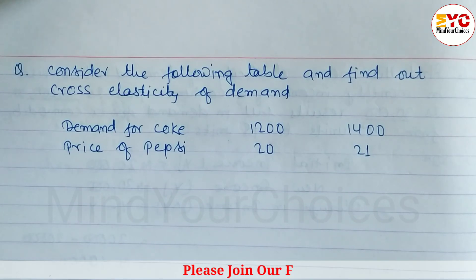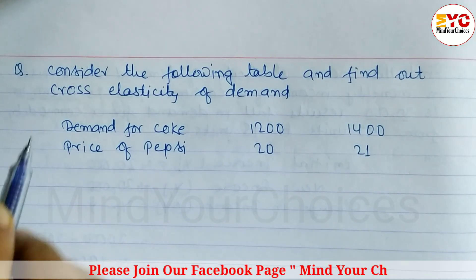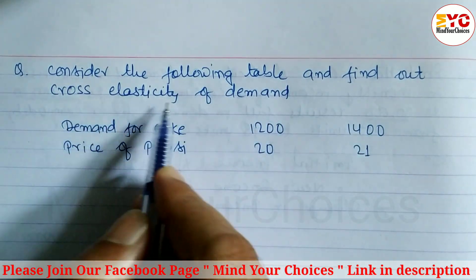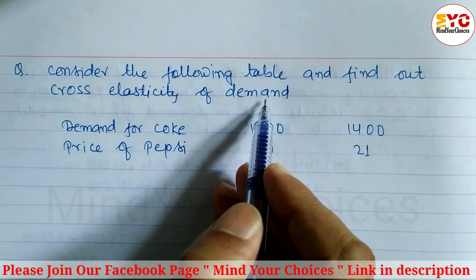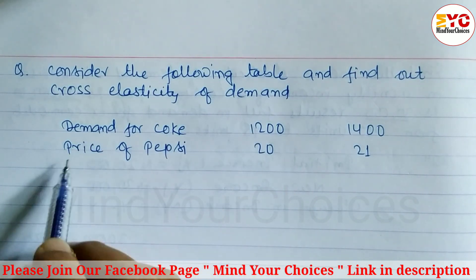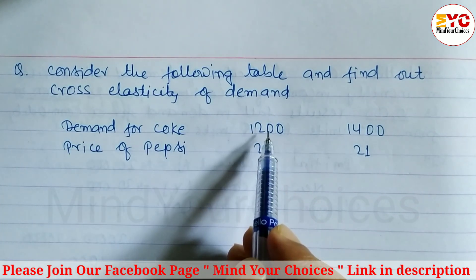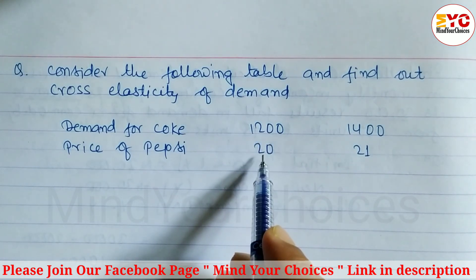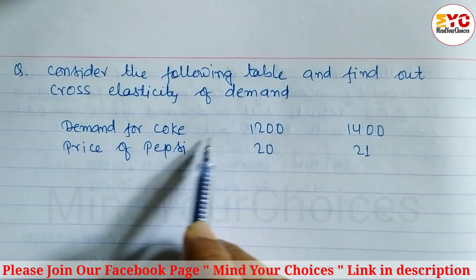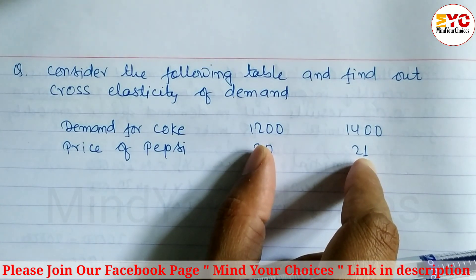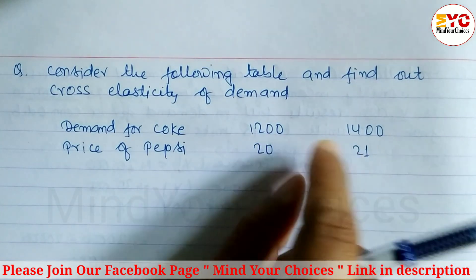This is a very important question taken from elasticity of demand and supply. Consider the given table and find out the cross elasticity of demand. We have to find out cross elasticity of demand for Coke with respect to the price of Pepsi. When the price of Pepsi increases, it affects the demand for Coke — the demand for Coke increases.